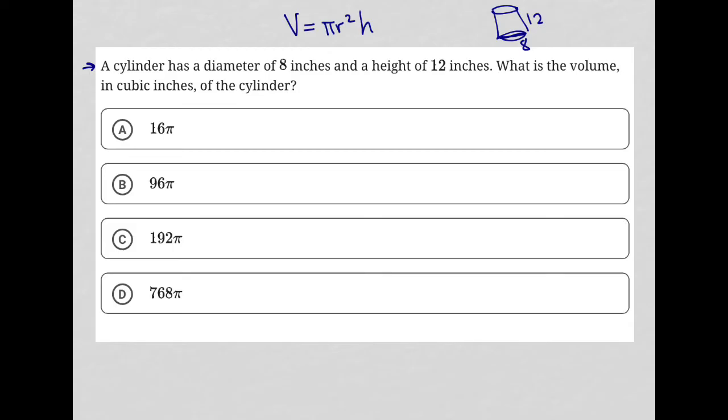We know that the diameter is 8, which means if d equals 8, that means r is the radius, which is half of the diameter. So r would be 4.